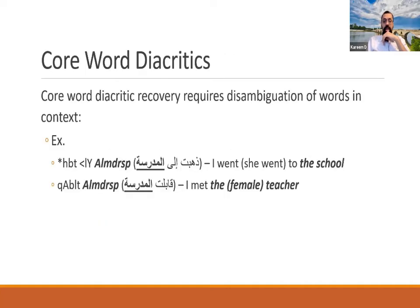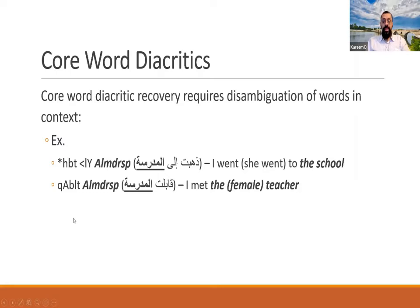If we look at core words: in one sentence, 'al-madrasa' means 'the school,' and in another, 'qabalt al-mudarrisa' means 'I met with the teacher' — where the ta marbuta at the end marks feminine. The words 'al-madrasa' and 'al-mudarrisa' have different core word diacritics, and it's the core word diacritics that determine which form we pick in context to figure out the actual meaning of the word.